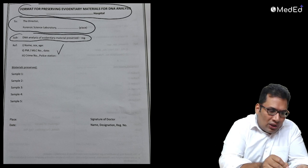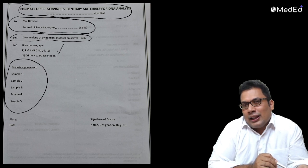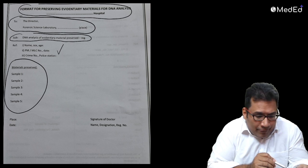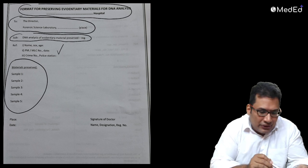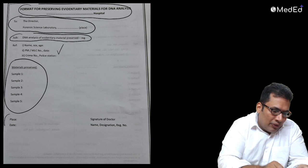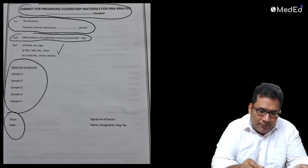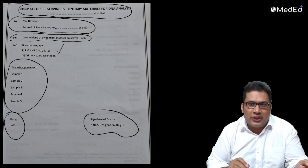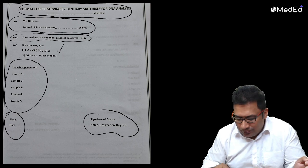Then list what materials are preserved - depending upon the case scenario given in your exam, samples 1, 2, 3, 4 and 5. Then place and date, signature of doctor, name, designation, and registration number. This is the pro forma which we follow.